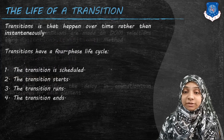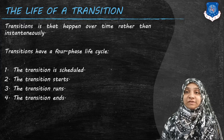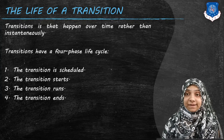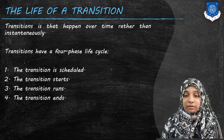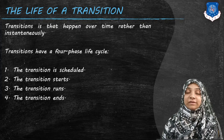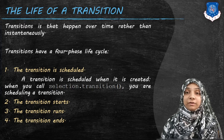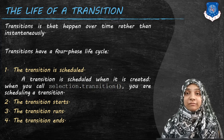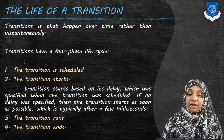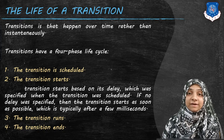The life of a transition happens over time rather than instantaneously. Transition is actually a function of time, not an event. It has four phases in its lifecycle: the first phase is when transition is scheduled, the second is when it starts, the third is when it runs, and the fourth is when it ends. Transition is scheduled when we call selection dot transition method.